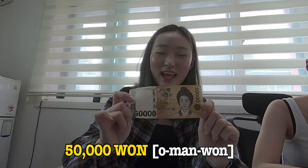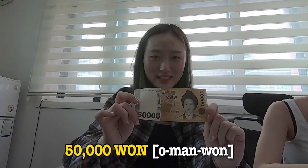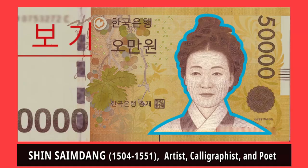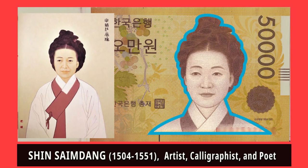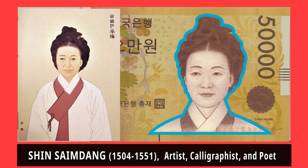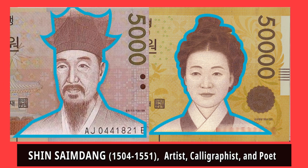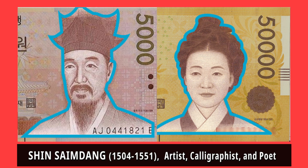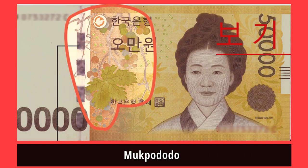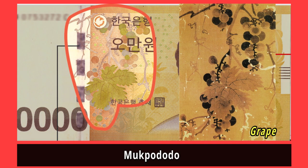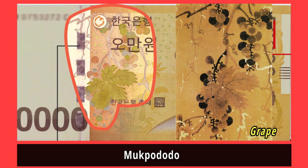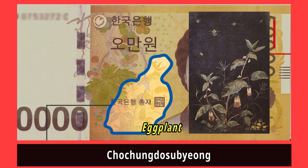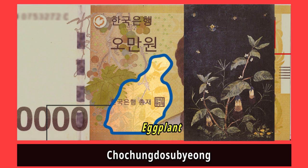This is the 50,000 won bill, called omanwon in Korean. On the front is Shinsa Imdang, who created various beautiful works of Chinese poetry. Her son Yi is the one on the 5,000 won bill, making them the world's first mother and son to be printed on money. Behind Shinsa Imdang you can see Mukpo Dodo, a painted grape, and also Chochungdo Subyeong, a painted eggplant.